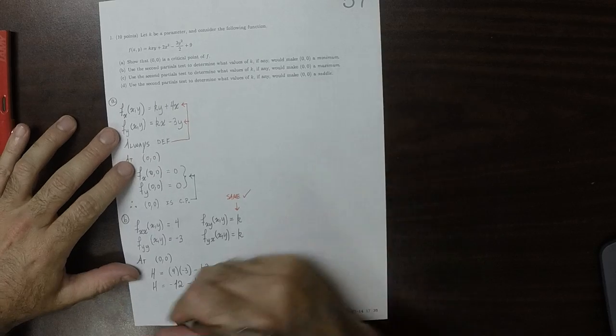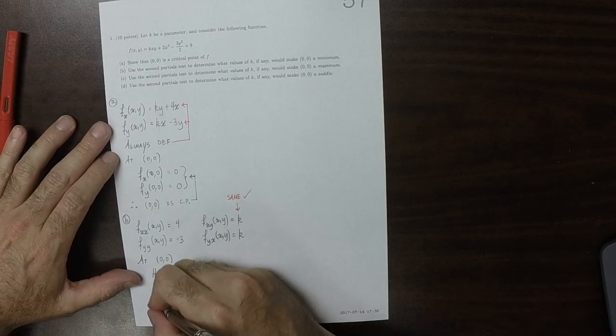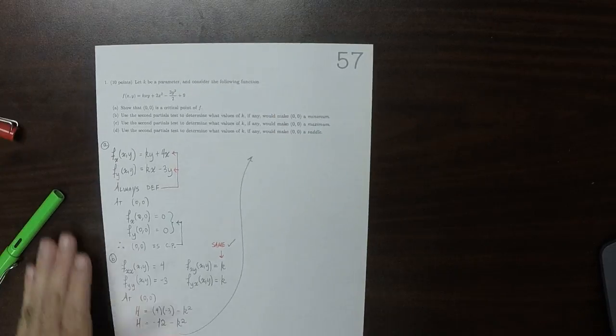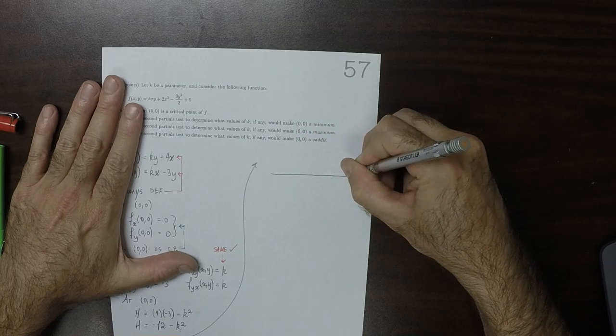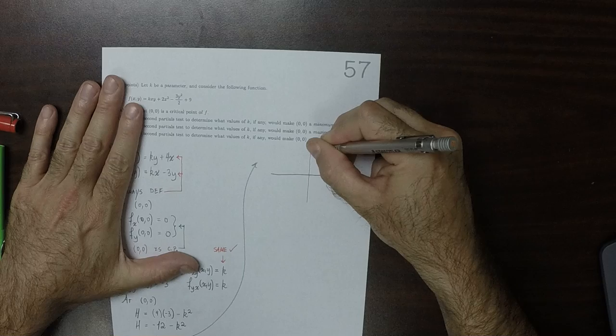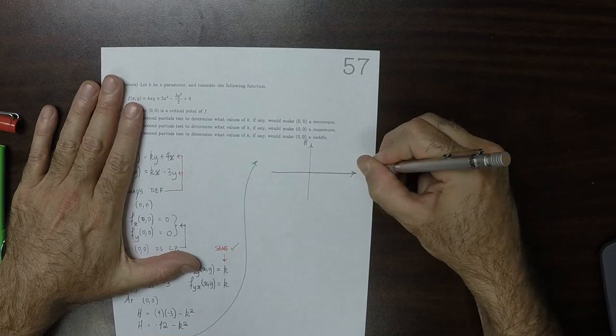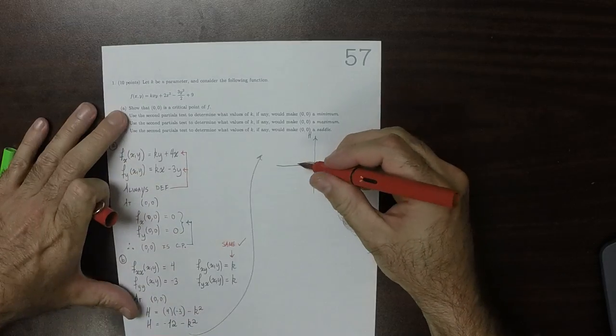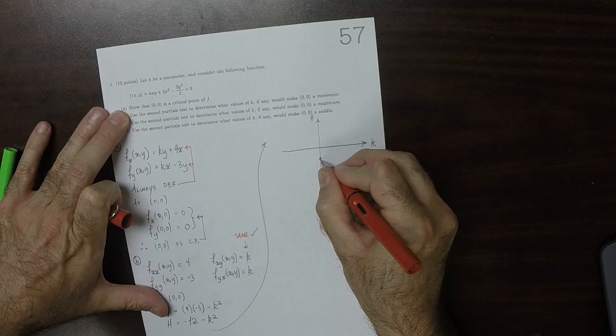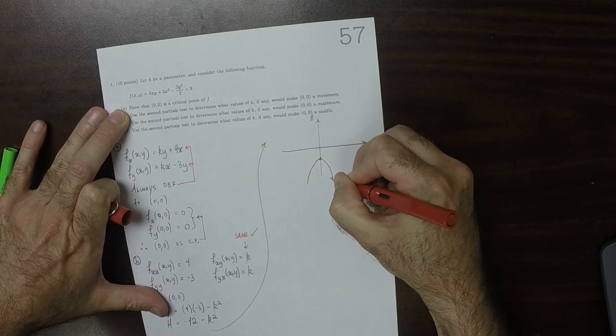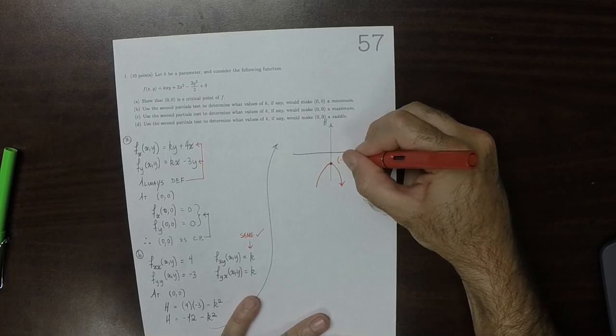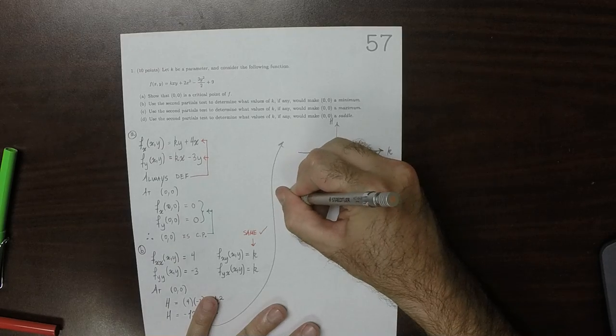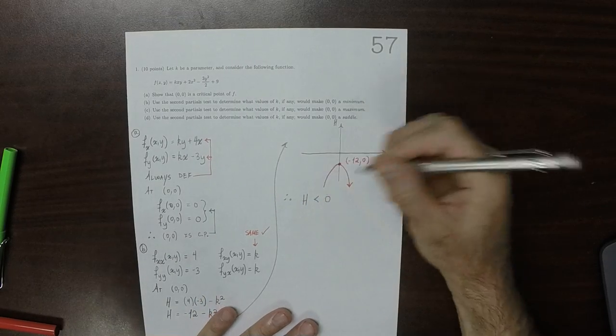And notice that if we consider this plot, the plot of it looks like this. So this would be the h-axis and this the k-axis. This is a parabola that opens down. Its vertex is at negative 12, 0, and as a result h is going to be negative for all k.